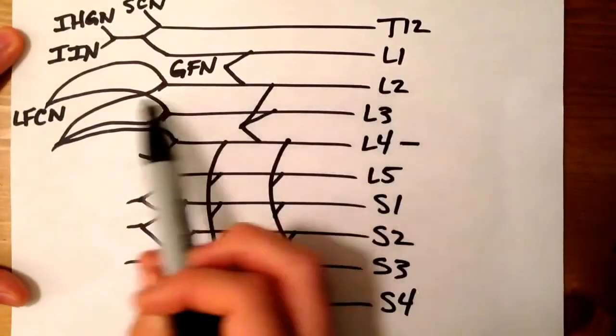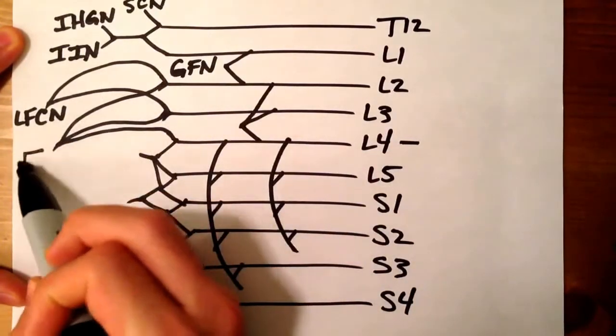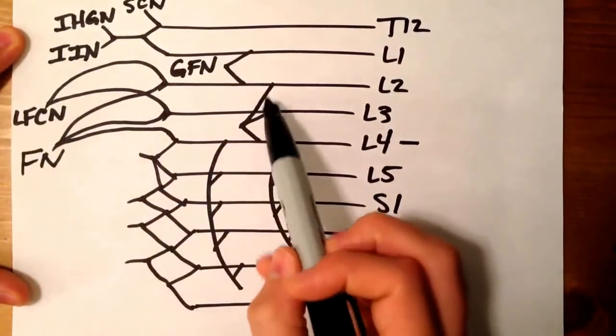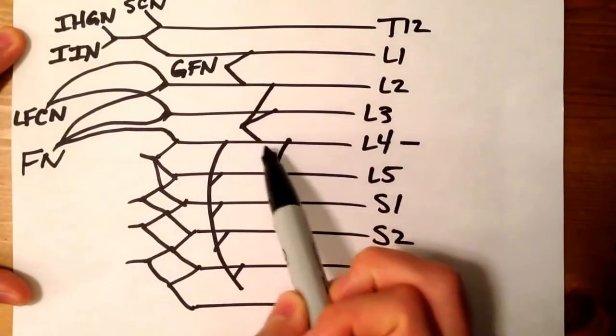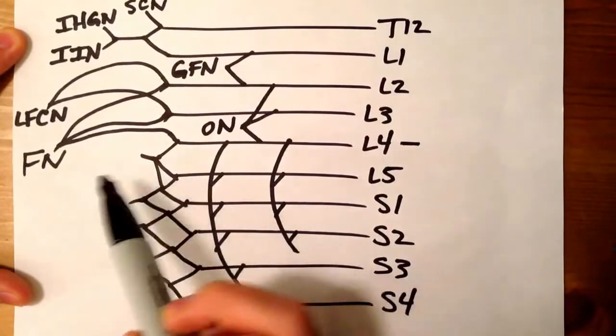Between L2 and L4, so all these connections, that's your femoral nerve. This right here, L2 to L4, that's your obturator nerve.